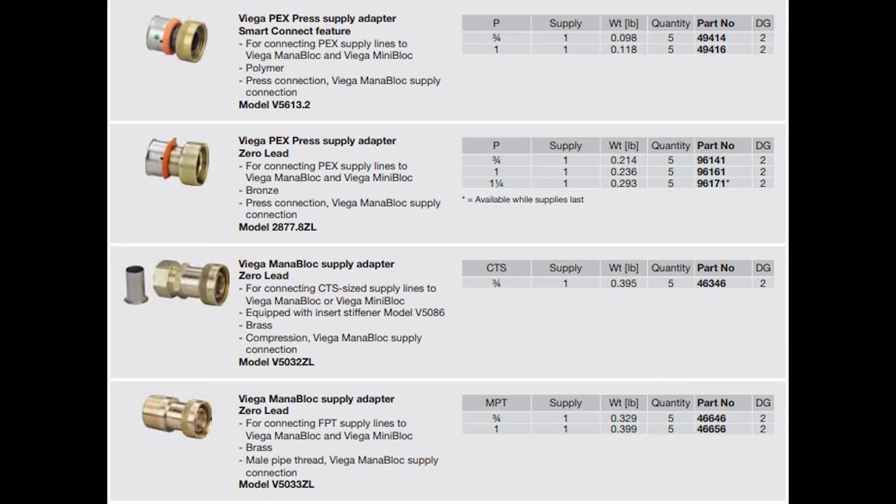Two more options are VEGA press supply adapters - one is part poly and the other is fully lead-free bronze. There's also a compression supply adapter that's fully brass and a male pipe thread supply adapter for connecting to a pipe supply line. There's actually a lot more accessories you can buy with this mana block. You can check them all out in the product manual.